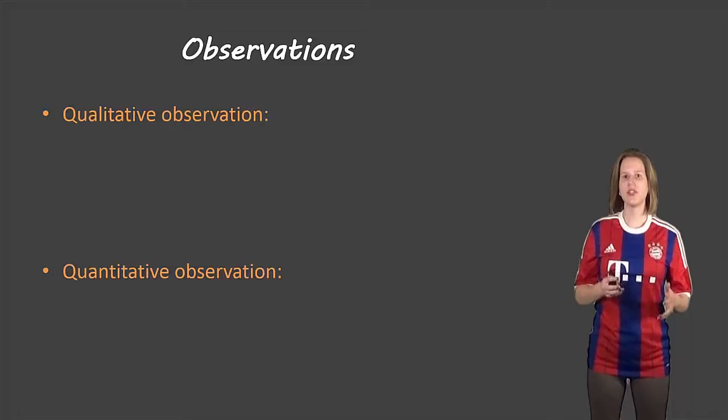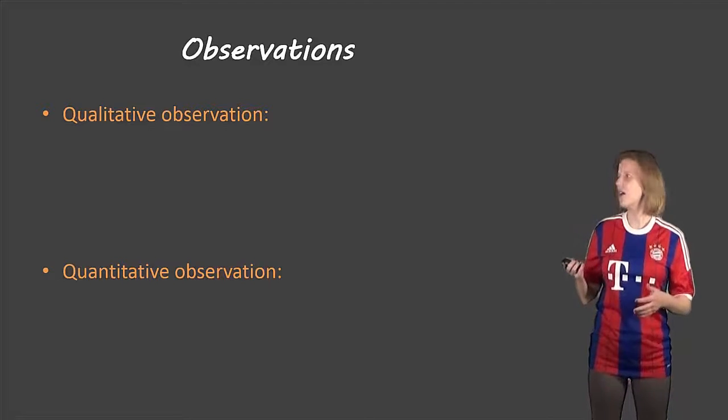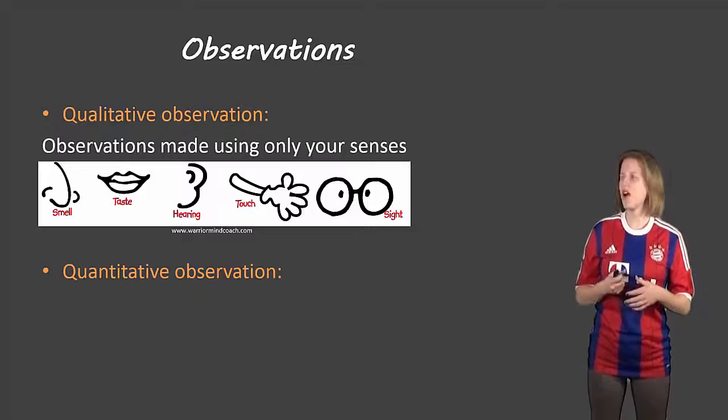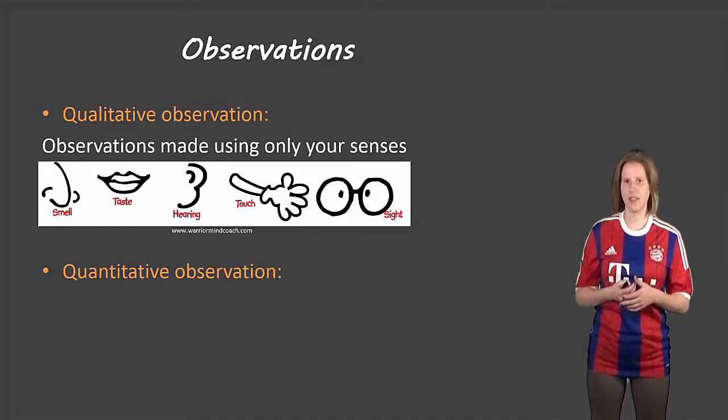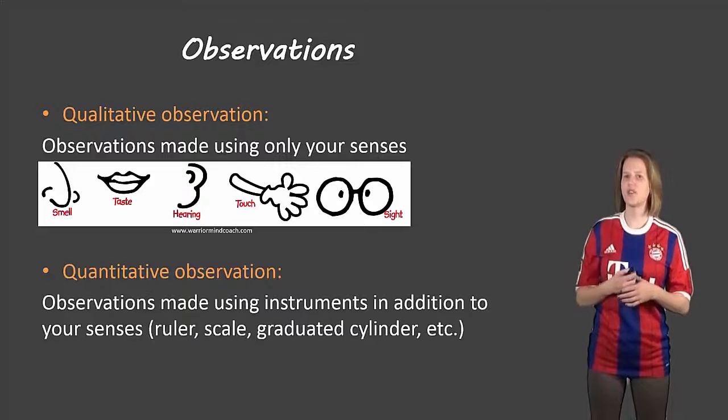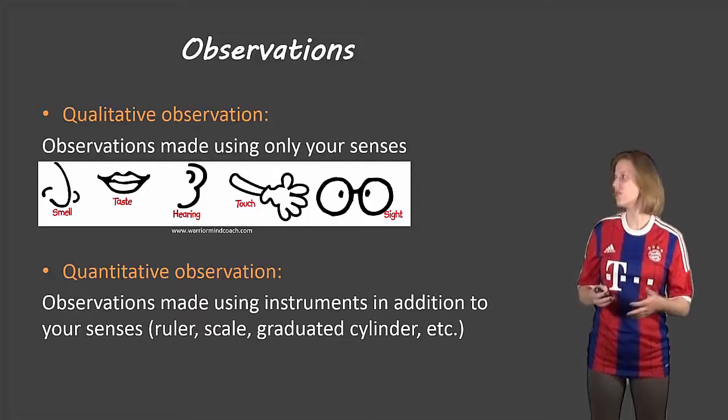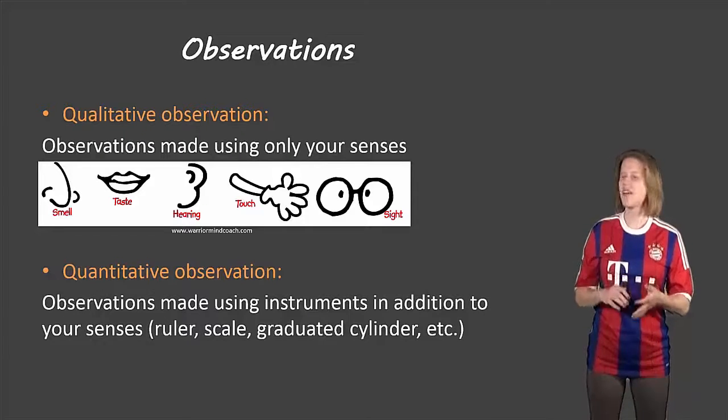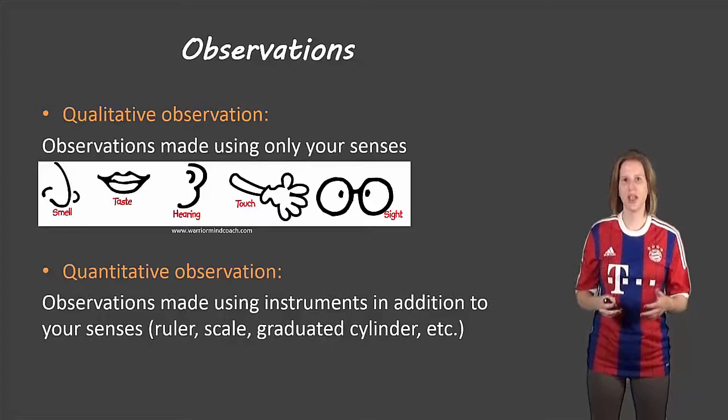Now let's take a look at the difference between qualitative observations and quantitative observations. Qualitative observations are observations made only using those five senses. Quantitative observations also use some sort of tools like rulers, scales, graduated cylinders, those types of things.